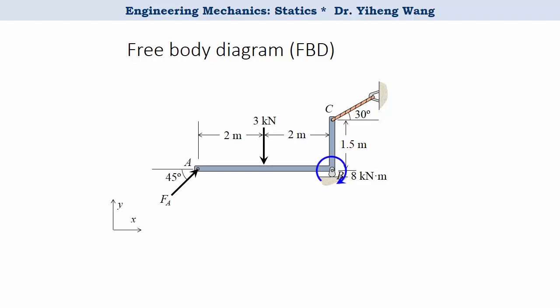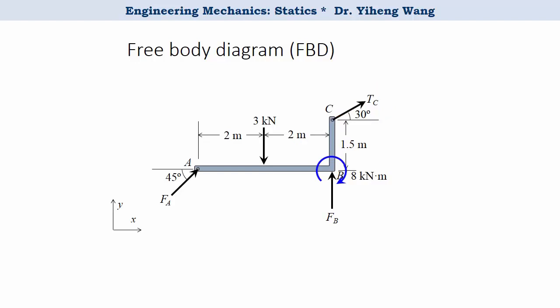The rocker at point B allows horizontal motion and rotations, and even allows the member to move upward. The only motion it does not allow is downward movement, so it exerts a force vertically upward. The cable at point C allows all motions except when the member wants to move away, so the cable exerts a tension force that pulls the member. Keep in mind that the force associated with a cable support is always a tension force that pulls — you can imagine trying to push with a cable. The free body diagram is now complete with three unknowns: FA, FB, and TC.